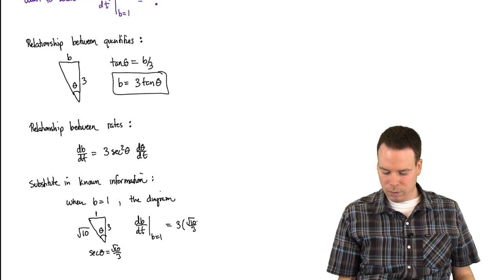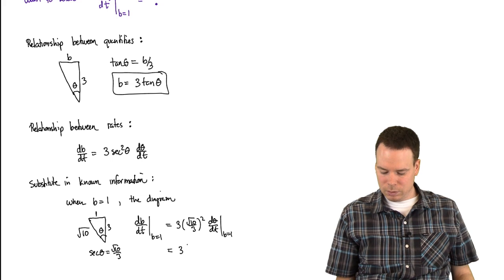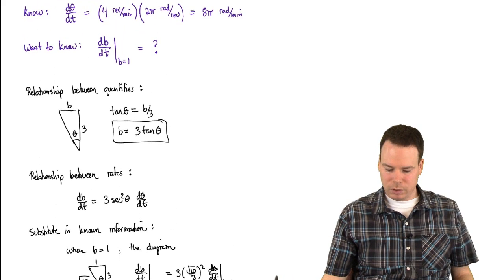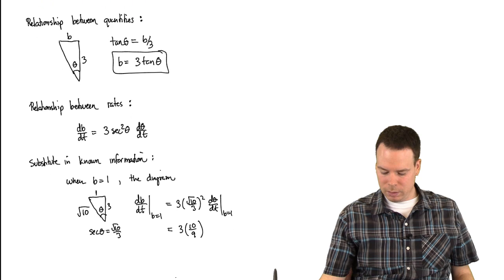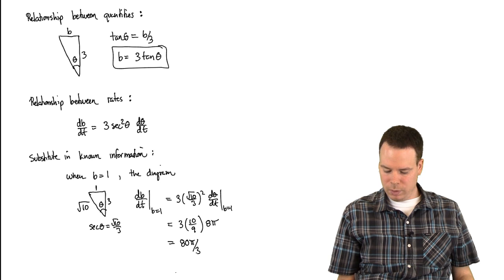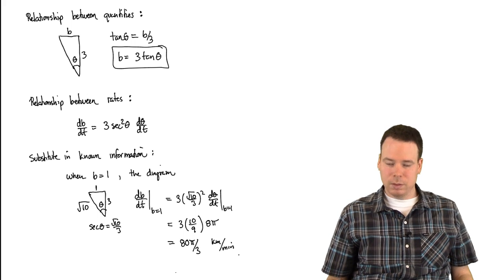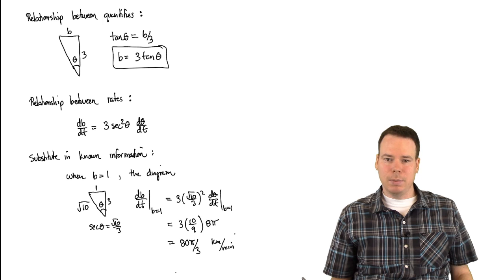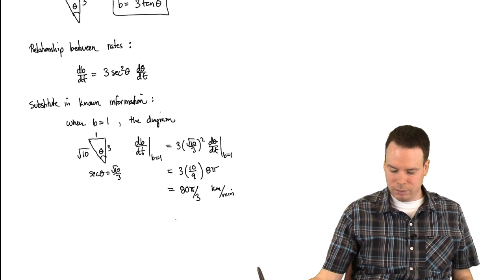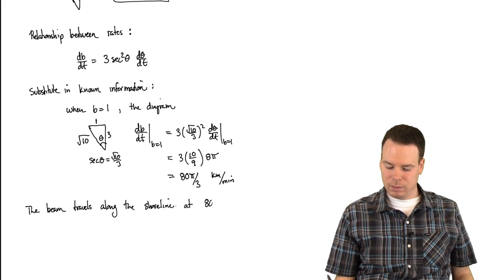So db/dt = 3·(√10/3)²·dθ/dt = 3·(10/9)·8π. That gives us 80π/3 kilometers per minute. Since b was measured in kilometers and t in minutes, db/dt is 80π/3 kilometers per minute. The beam travels along the shoreline at 80π/3 kilometers per minute.